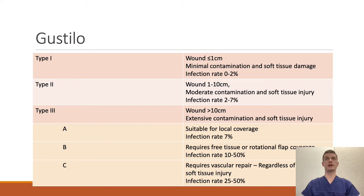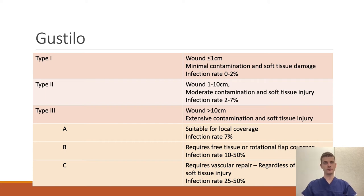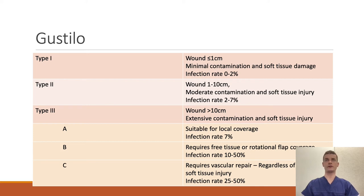Type 1 has minimal contamination and very low post-operative infection rates. Type 2 is a larger wound with moderate contamination and moderate infection rate. Type 3s, subdivided into A, B, and C, are larger and much more extensive wounds greater than 10 centimetres. The A, B, C subdivisions are based on the degree of surgical repair and infection risk — if local coverage is achievable outcomes are good, but if there is more reconstruction work or vascular injury involved, infection and complication rates go up.